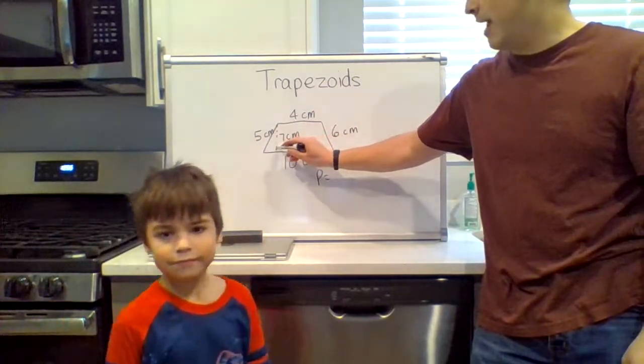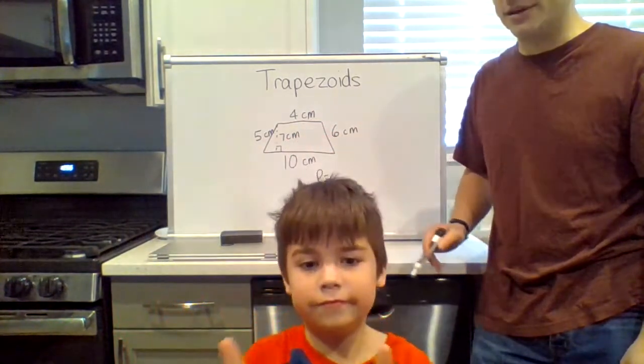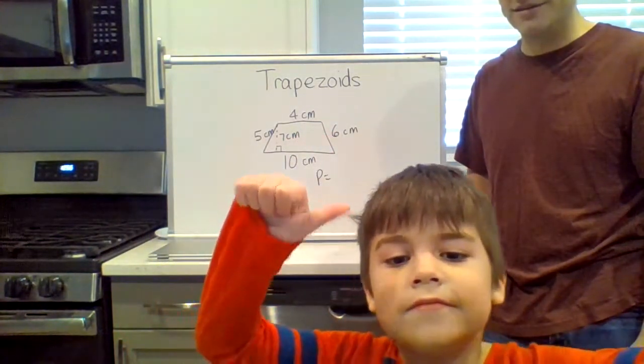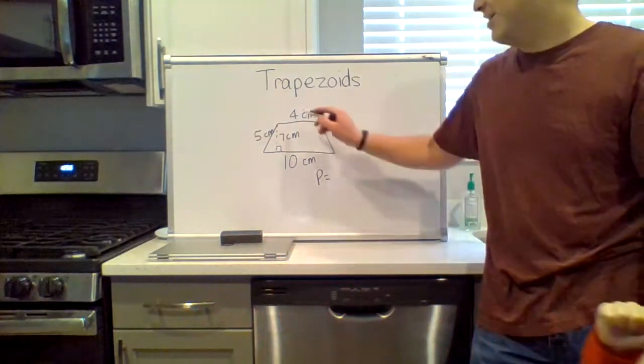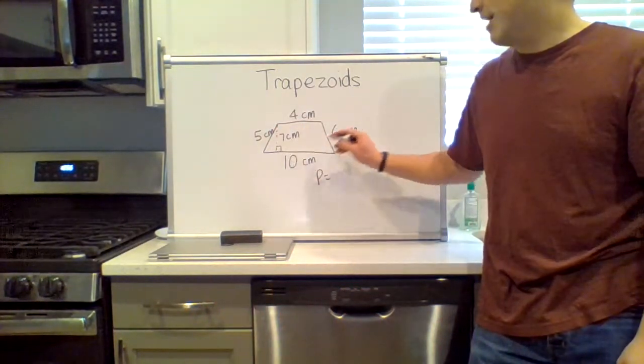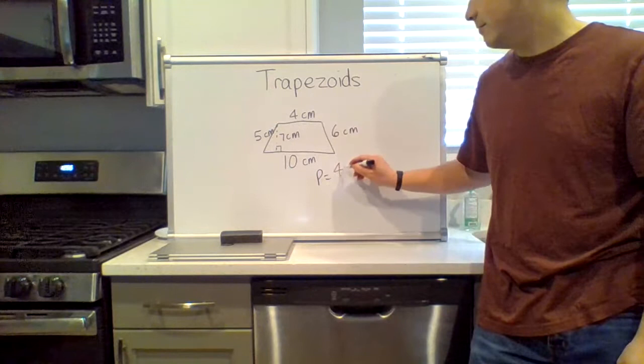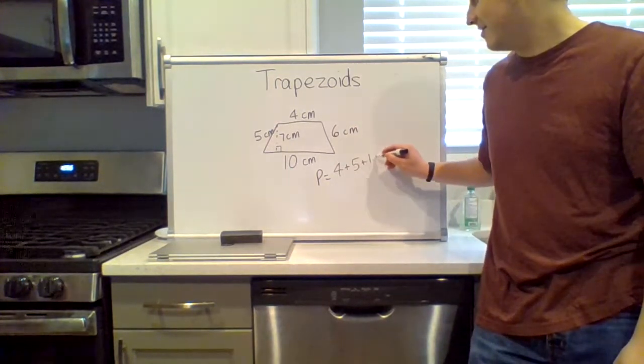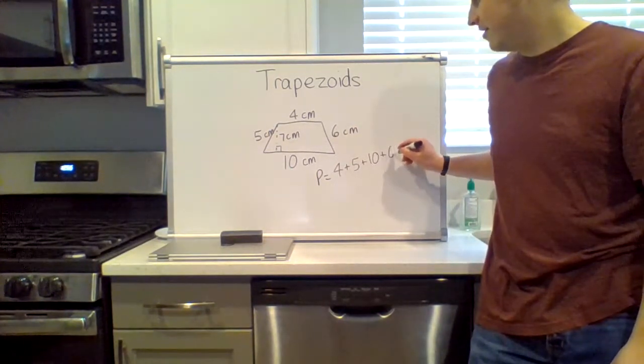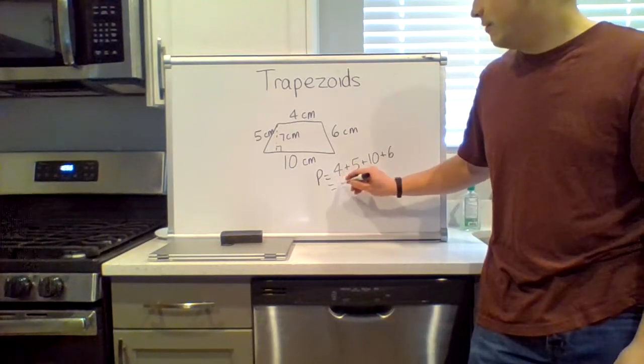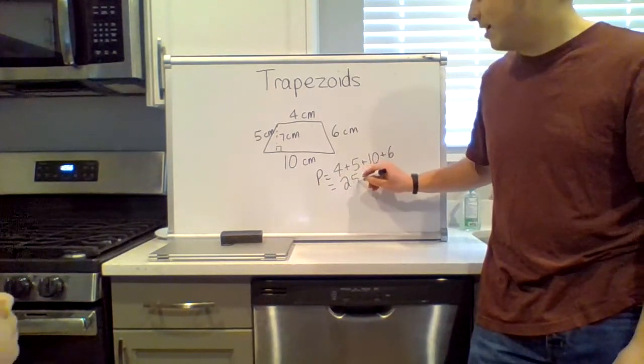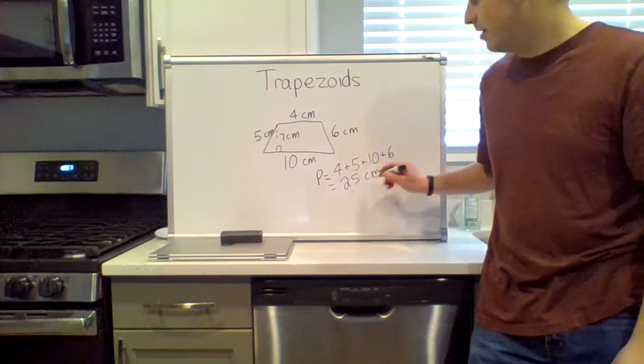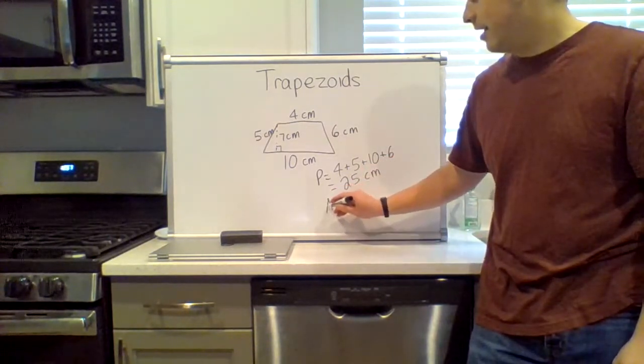The height here is not important. What is important Nathan, you're going to see, is four plus five plus ten plus six. That gives you twenty-five centimeters.